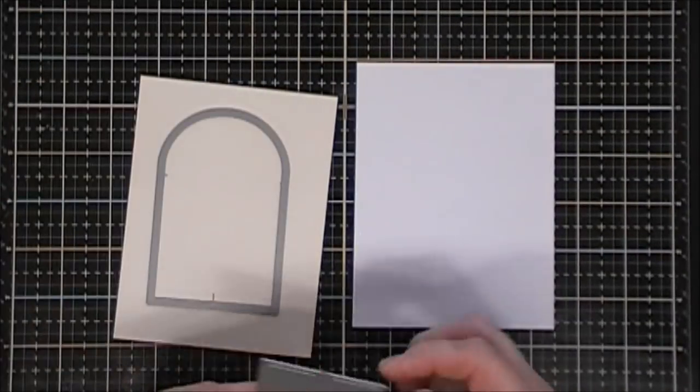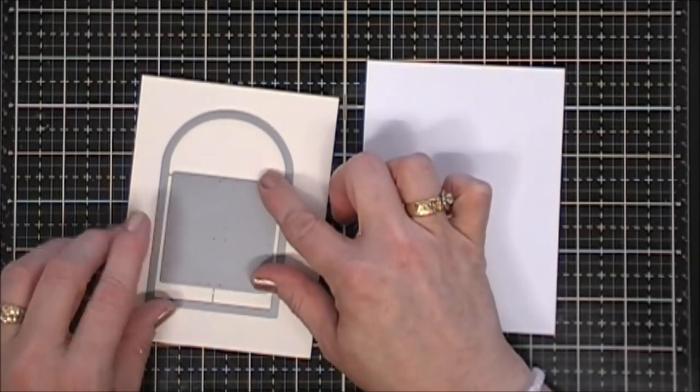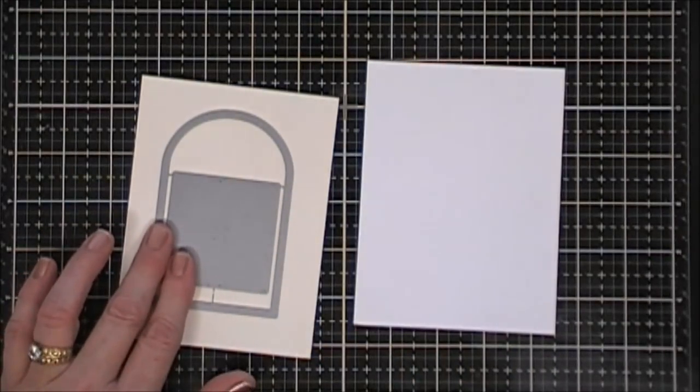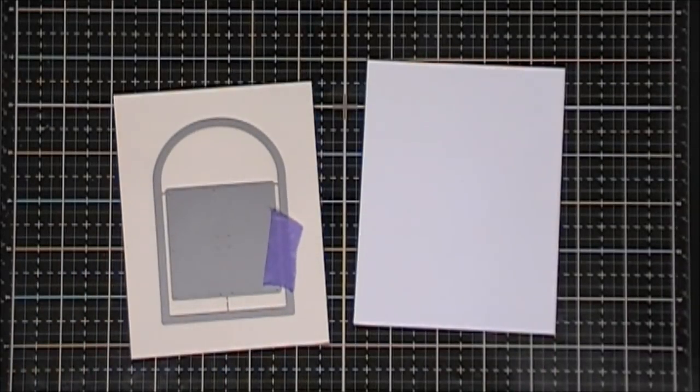The inside piece just goes right back in the back panel here, and then it creates a cute little dome shape window. I'll die cut those out.